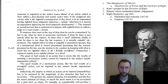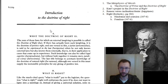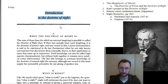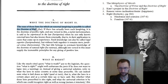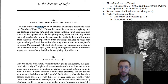Moving on to what exactly is the project of the Doctrine of Right. He explains it right here in his introduction: 'The sum of those laws for which an external law giving is possible is called the Doctrine of Right.' So what does that mean? It's the sum of those laws — add them all together — every law for which an external law giving is possible.